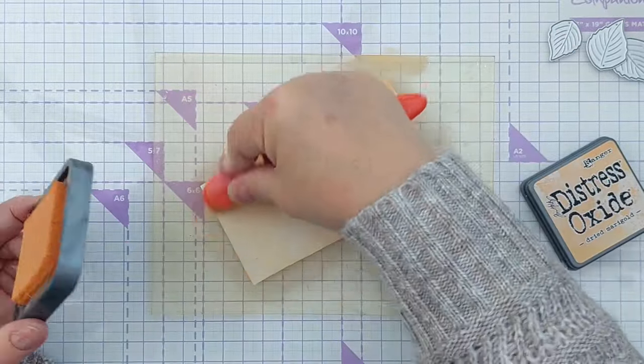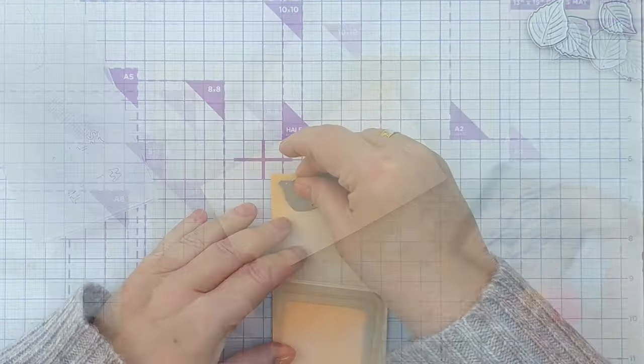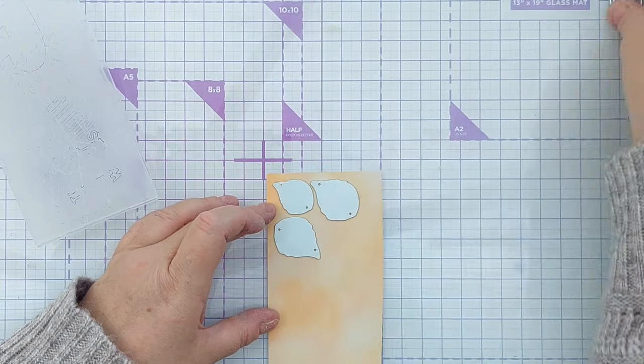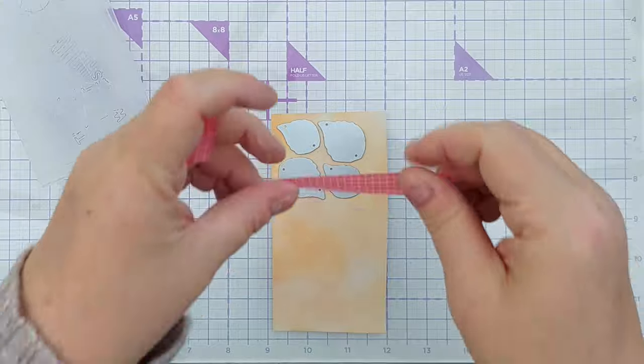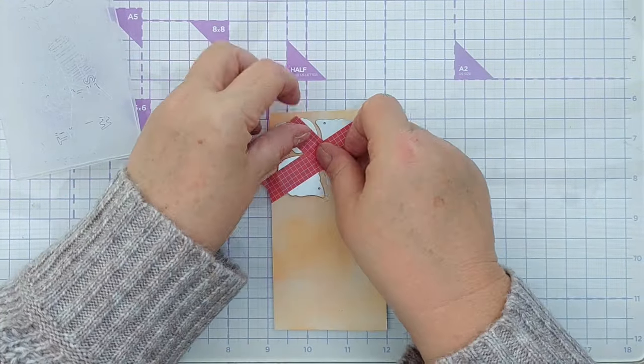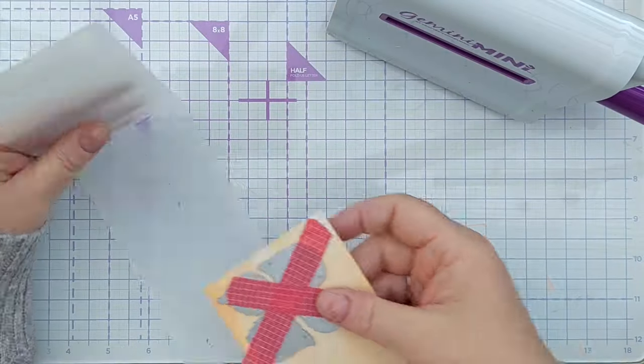Next I used my leaf dies to die cut out some leaves from my orangey paper. I stuck them down with washi tape and ran them through my Gemini mini, and I managed to get 10 leaves out of this piece of colored paper.